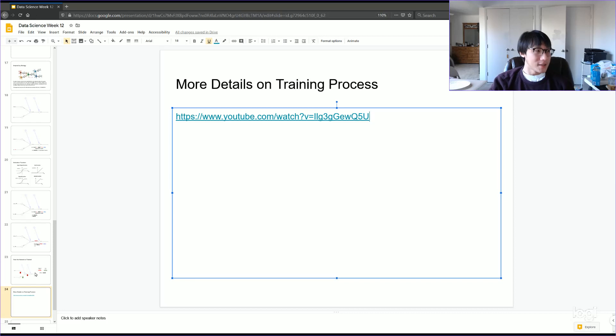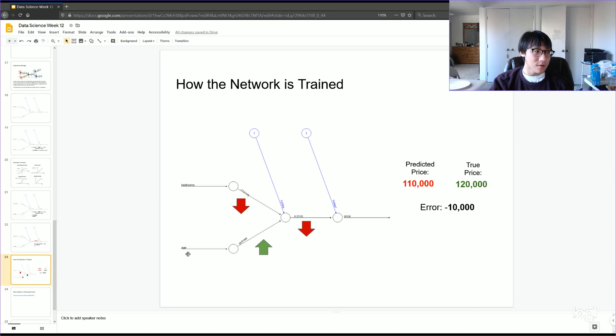Maybe one additional thing I should say is that the algorithm that's used for nudging these weights in order to reduce the error, these algorithms, they've been improved over the years. And initially, the algorithms they were using were not very good, and then someone invented a very popular algorithm called backpropagation.